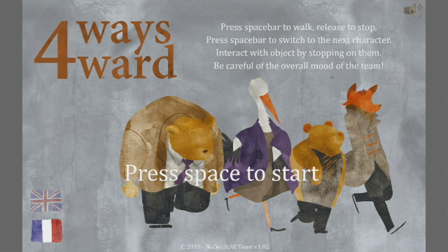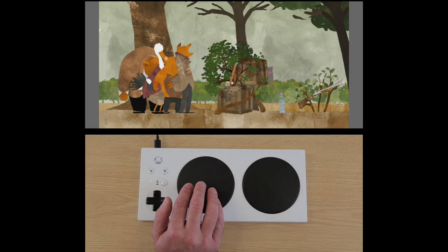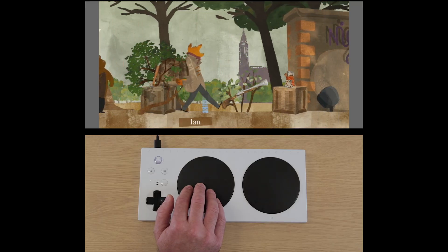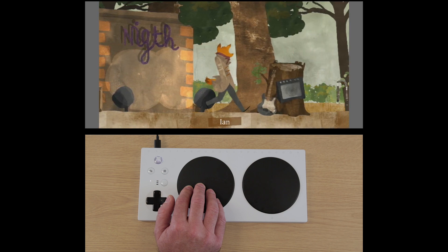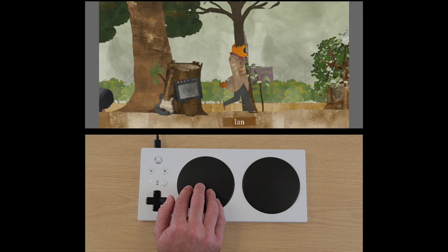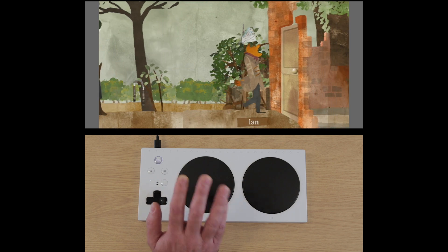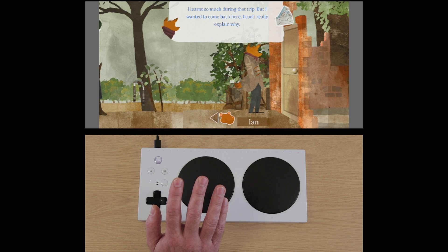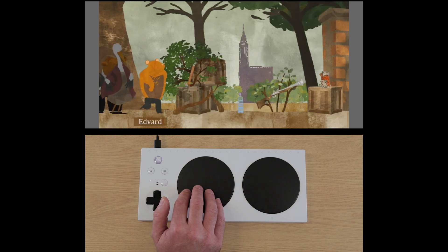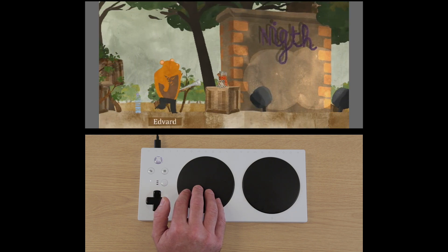This is Four Ways Forward, a beautifully animated adventure game. This has an unusual mechanism that you hold a switch to move a character forward through the world and then let go if you want to interact with an object nearby and find out the story behind it. And it's different for each character.